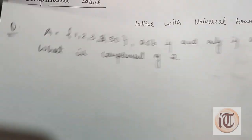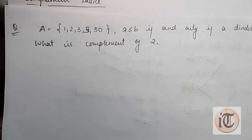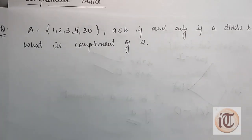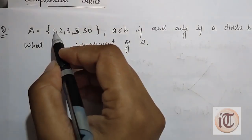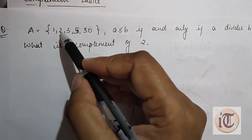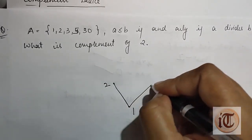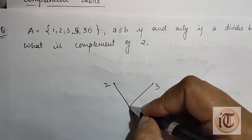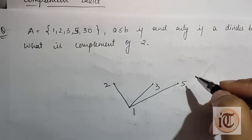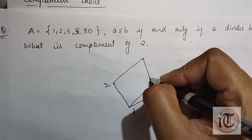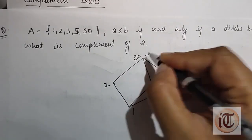Now let's take another example. Suppose we have a set A = {1, 2, 3, 5, 30} where a ≤ b if and only if a divides b. We have to find the complement of element 2. First we draw the Hasse diagram using the divisibility relation. The element 1 is at the bottom; 2, 3, and 5 are above it (each divisible by 1); and 30 is at the top, divisible by 2, 3, and 5. The greatest element is i = 30 and the least element is o = 1.